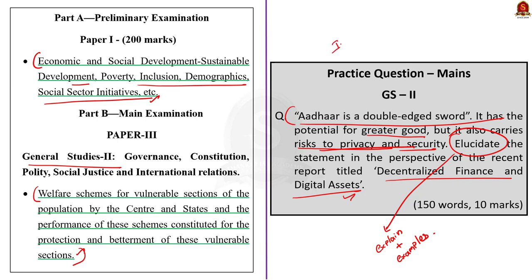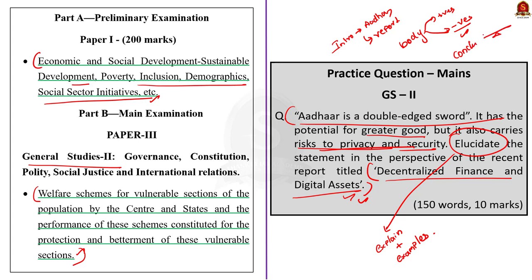The statement says Aadhaar has advantages and concerns at the same time. So in the introduction part, you have to write some points about Aadhaar. A report is cited, so you can even start by mentioning some points from the report. In the main body, split it into two parts — first write pros of using Aadhaar, and in the second part write counter arguments and concerns. In the conclusion part, you have to take a balanced stand.